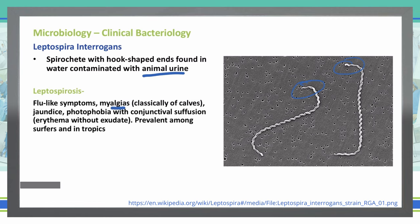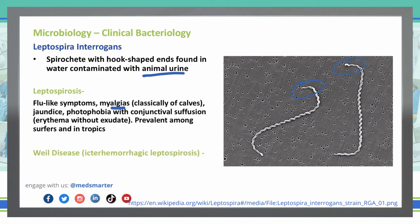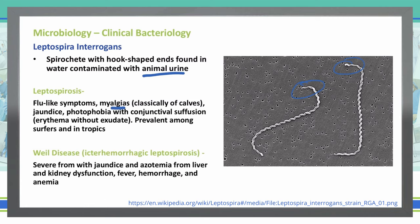The other disease it can cause is Weil's disease, also known as icteric hemorrhagic leptospirosis. This is the most severe form, which gives us jaundice, azotemia — all from liver and kidney dysfunction. We can also see fever, hemorrhage, and anemia associated with Weil's disease.